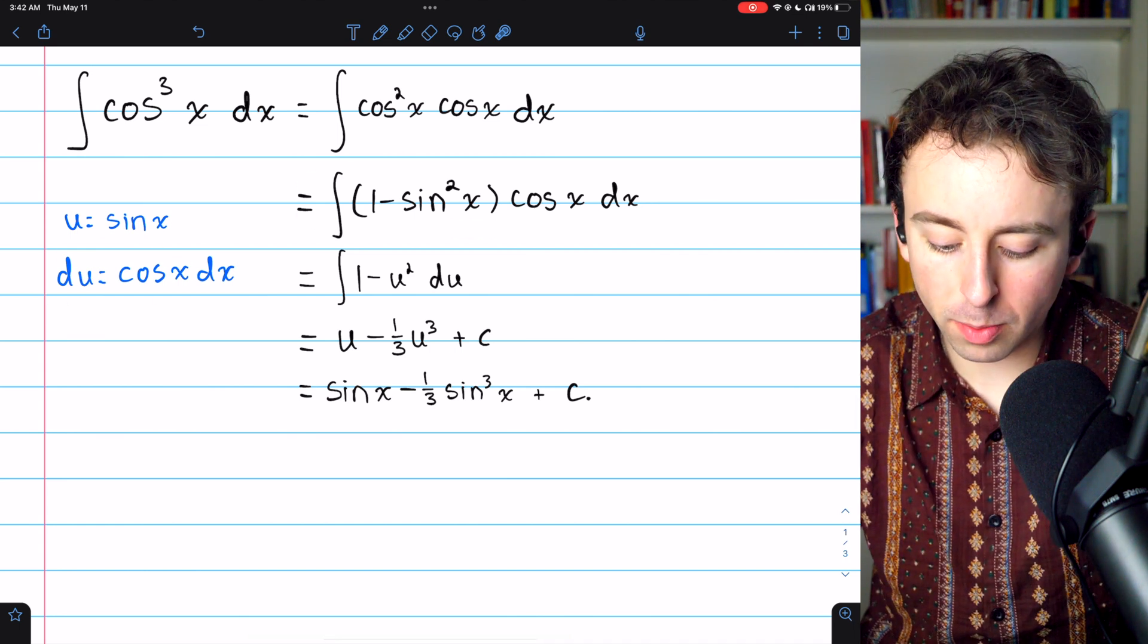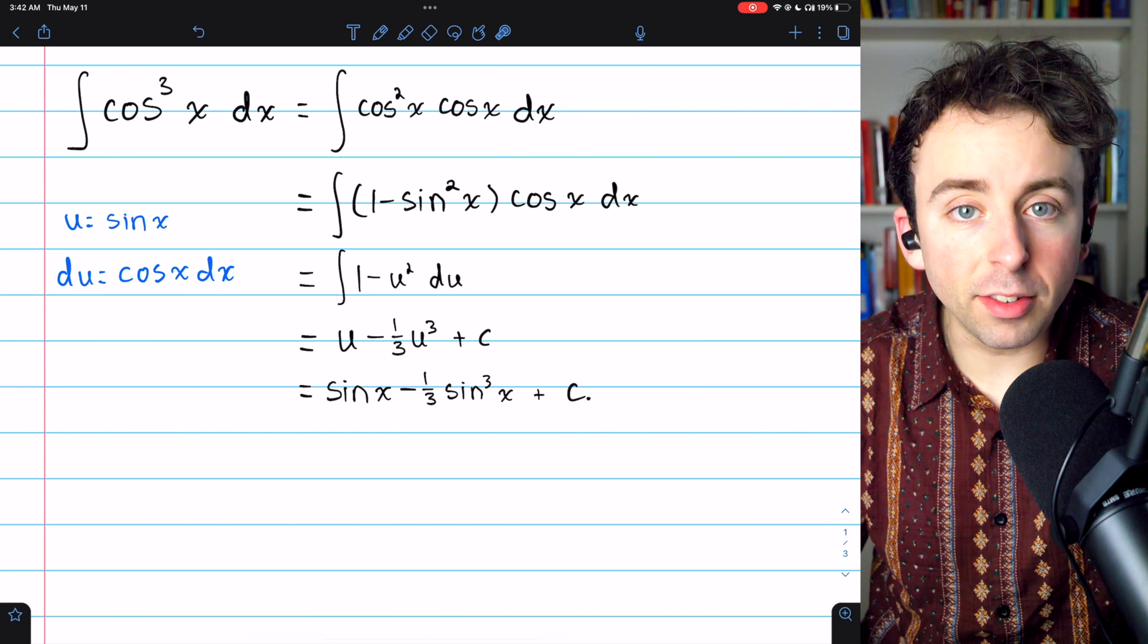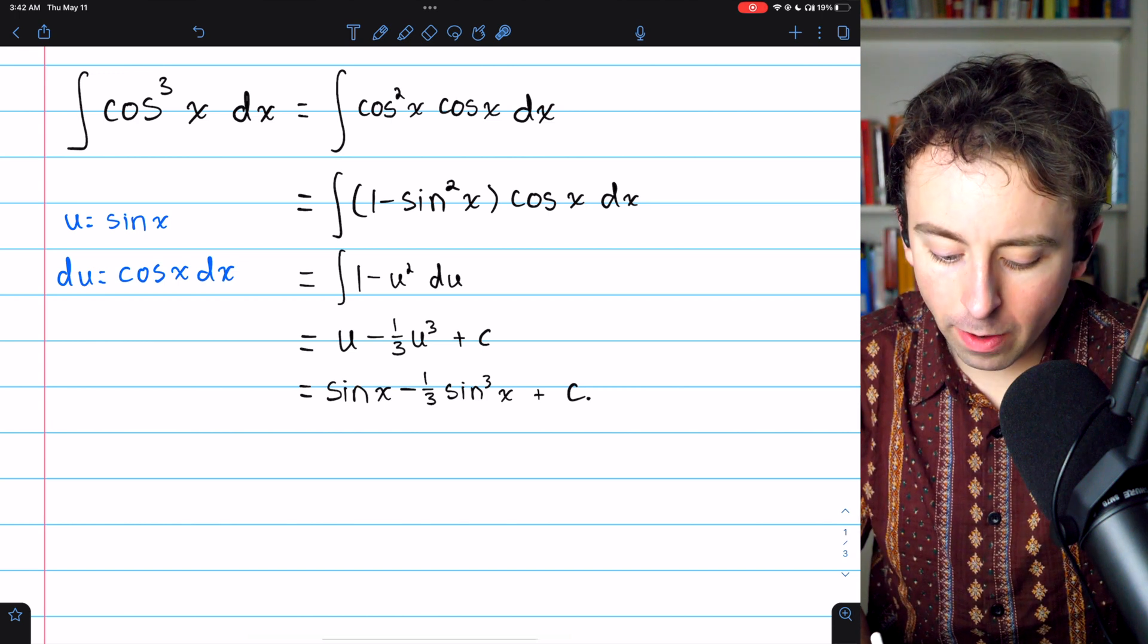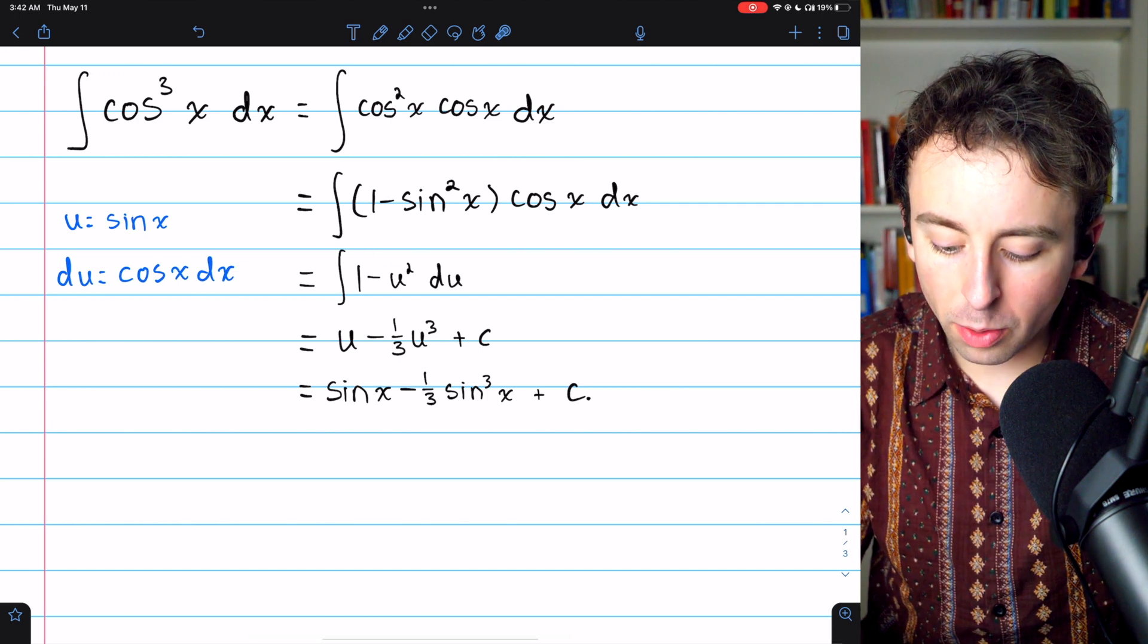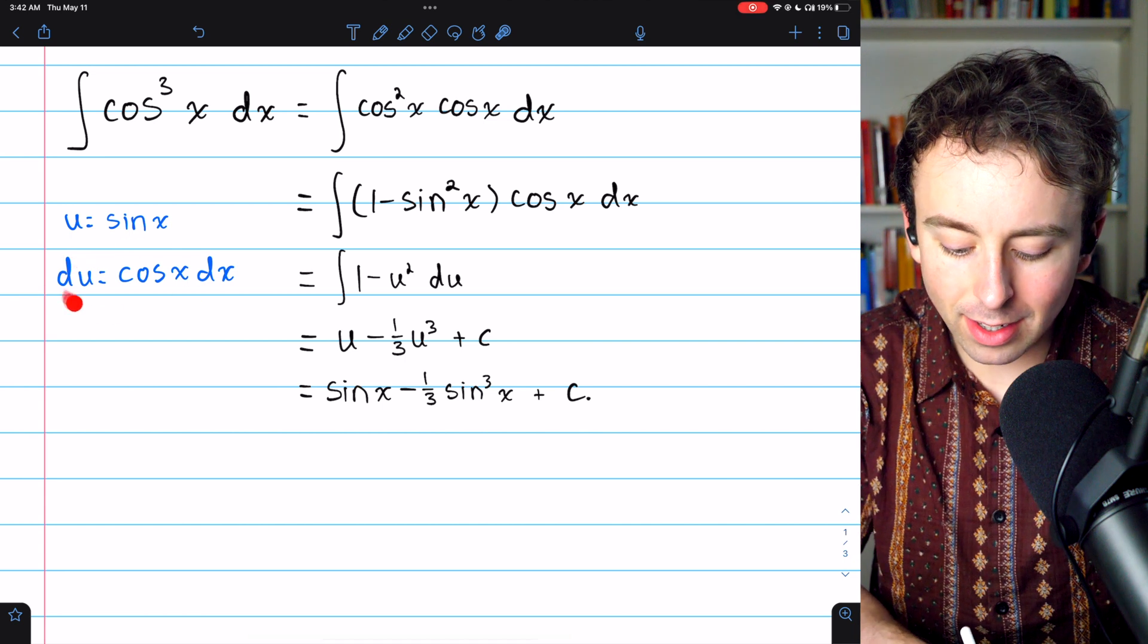so rewriting the integral in terms of u, sine is u. So 1 minus sine squared is 1 minus u squared. Cosine x dx, of course, is du.